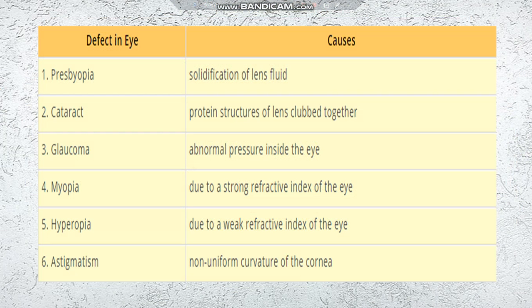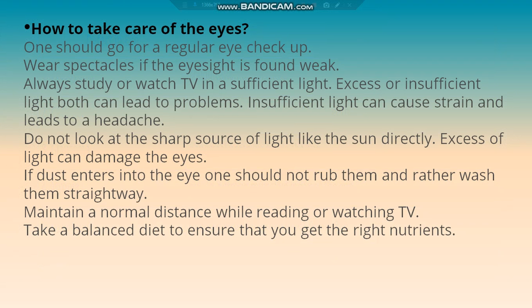Myopia is caused due to a strong refractive index of the eye, and hyperopia is due to a weak refractive index of the eye. Note that myopia and hyperopia are the opposite of each other. Astigmatism is caused by a non-uniform curvature of the cornea.